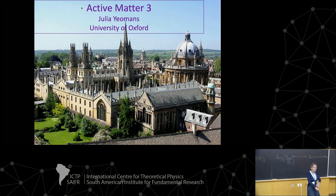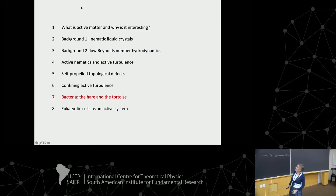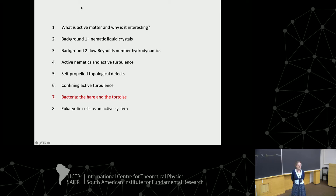Hello everybody. This is round three, the third part of my active matter lectures. What I want to do today is follow on from yesterday and look at two problems. The first is the hare and the tortoise problem, and the second is looking at eukaryotic cells — squishy cells — and how they move. We've been thinking about these things recently; I've been learning this biophysics because the ideas of topological defects seem to be emerging in biological systems.